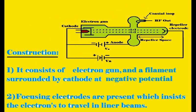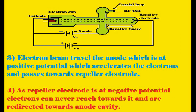It consists of an electron gun with a filament surrounded by a cathode, which is at negative potential. Focusing electrodes are present which do not allow the electron beam to disperse in random directions, insisting the electrons travel in linear beams. The property of electrons is to disperse randomly as they are charged particles.